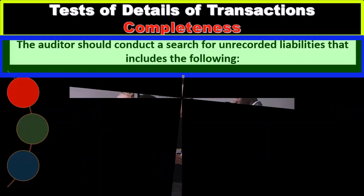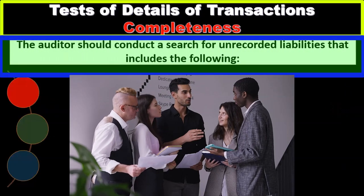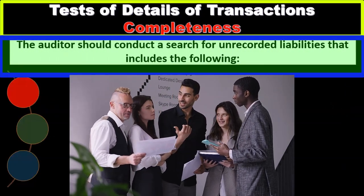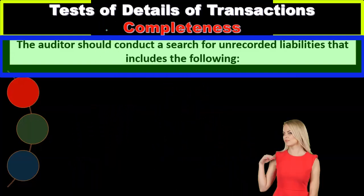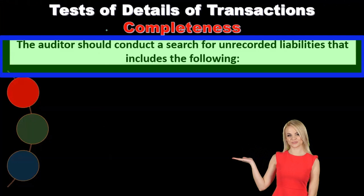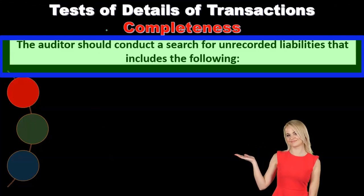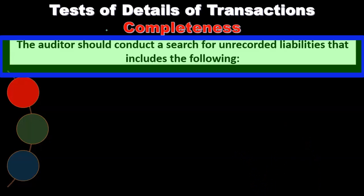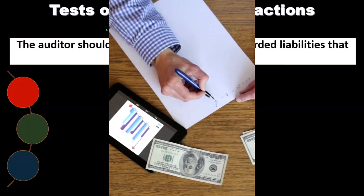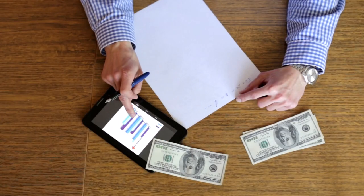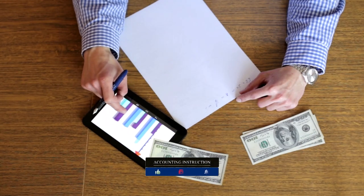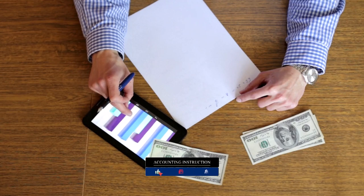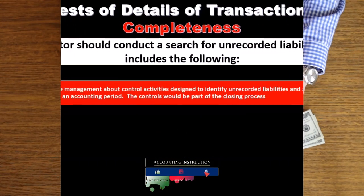The auditor should conduct a search of unrecorded liabilities. Completeness is the assertion that everything that should have been recorded is recorded — are the financial statements complete? In other words, are there transactions that have happened that are not reflected in the financial statements?